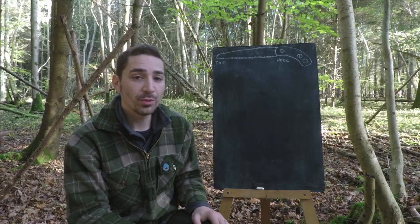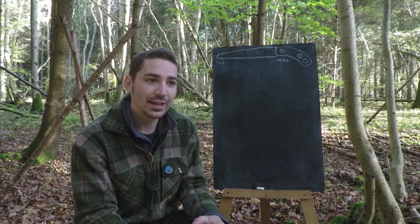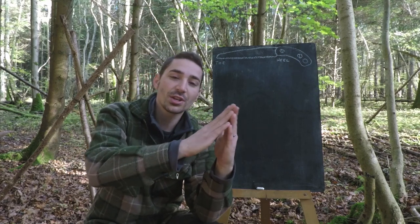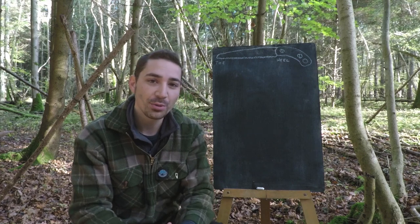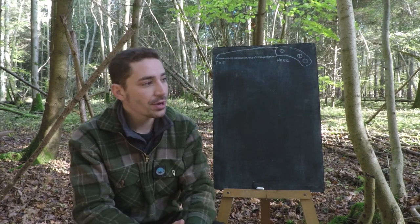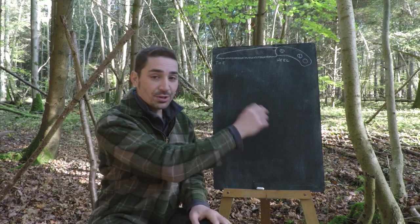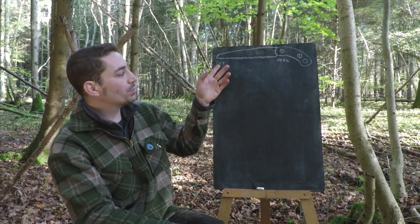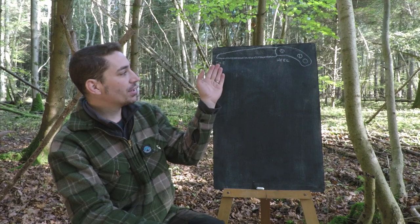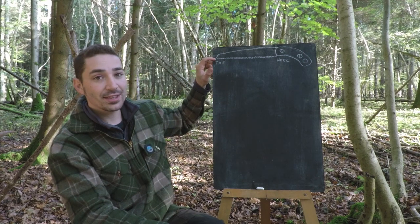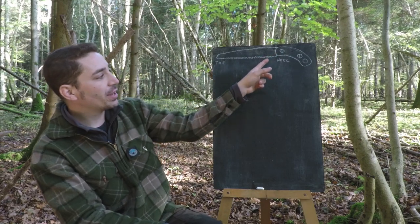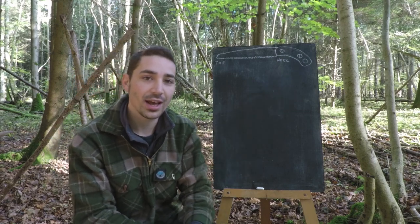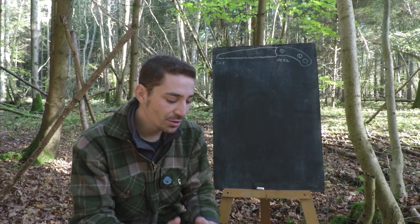I've drawn a handsaw at the top of this chalkboard here mainly as a point of reference. Later on we're going to talk about the rake on teeth - the lean, whether it leans towards the toe or the heel of the saw - which determines whether it's predominantly a push or a pull saw. The toe is where the cutting edge ends, where the teeth end at the very edge of the saw blade. Where the blade comes into the handle, we have the heel.